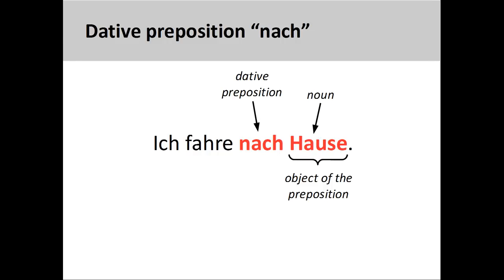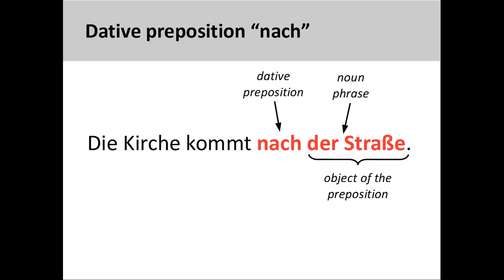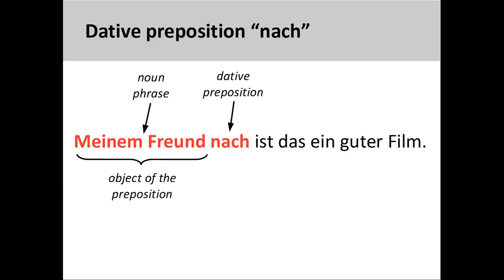The exception to this rule is when referring to your own home as a destination — in this instance, you need to use 'nach.' For example, 'ich fahre nach Hause' — I am going home. 'Nach' can also describe activity that comes after a specific point in time, such as 'wir gehen nach dem Film ins Café' — we are going to the café after the film. It can also describe how something comes after something else in a physical sense: 'die Kirche kommt nach der Straße' — the church comes after the street. 'Nach' also means 'according to,' as in 'meinem Freund nach ist das ein guter Film' — that's a good film, according to my friend. Note that when used in this manner, it is placed after the object.